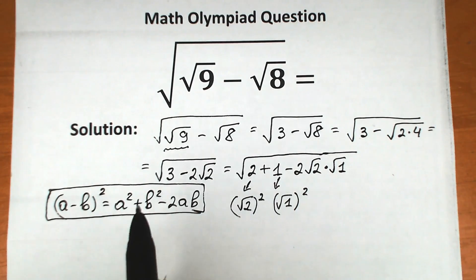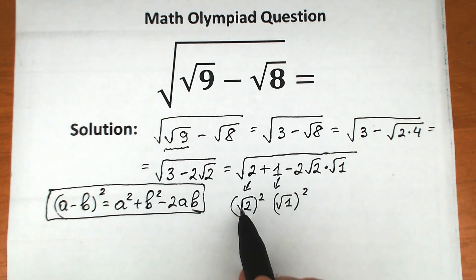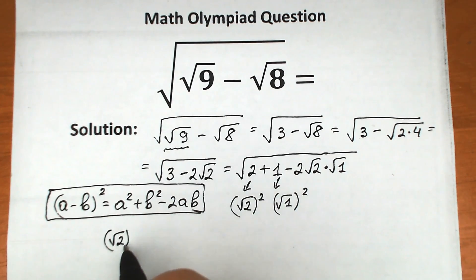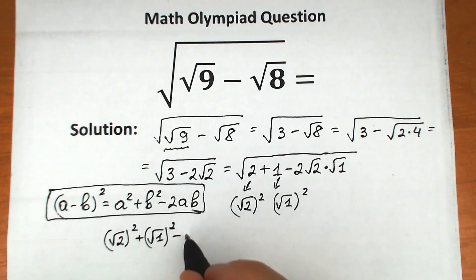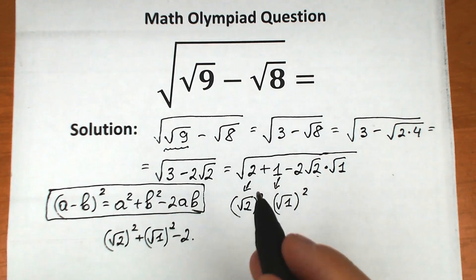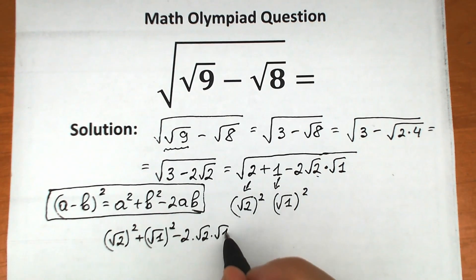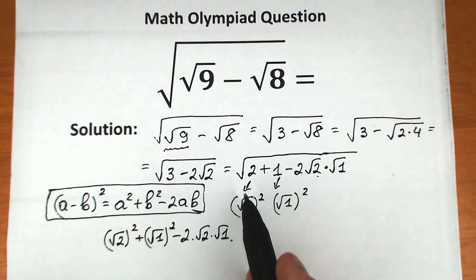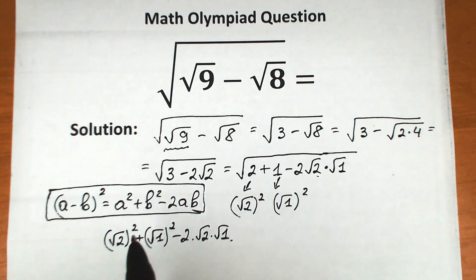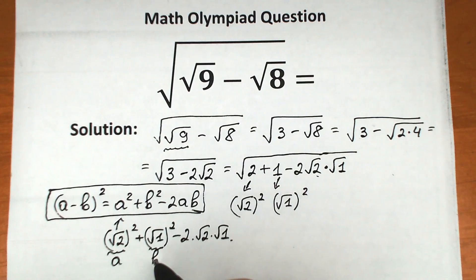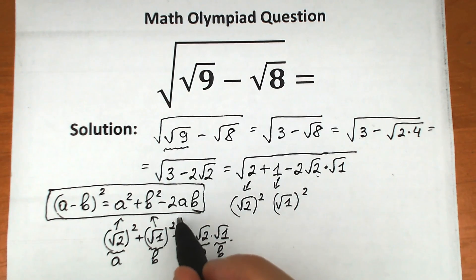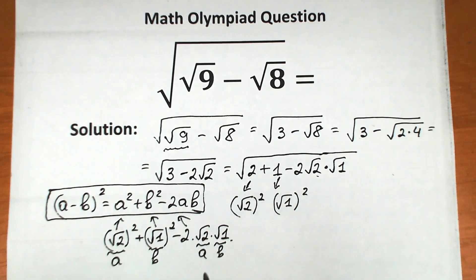Let's look at our expression. We have square root of 2 squared, plus square root of 1 squared, minus 2 times square root of 2 times square root of 1. Comparing this with the formula a squared plus b squared minus 2ab, we can see that a is square root of 2 and b is square root of 1, which is 1. This is exactly the same pattern as our general formula, so we can apply it.